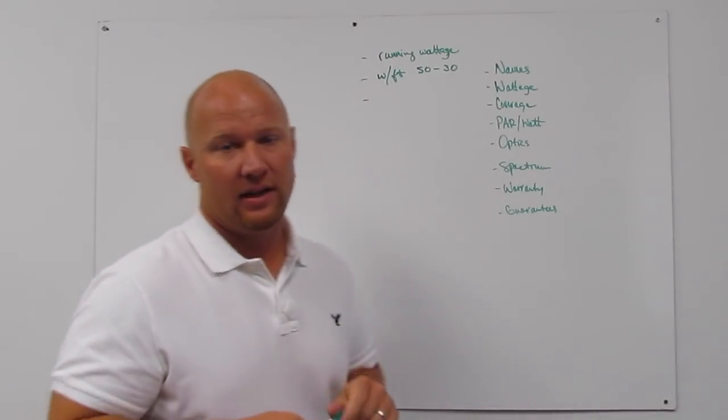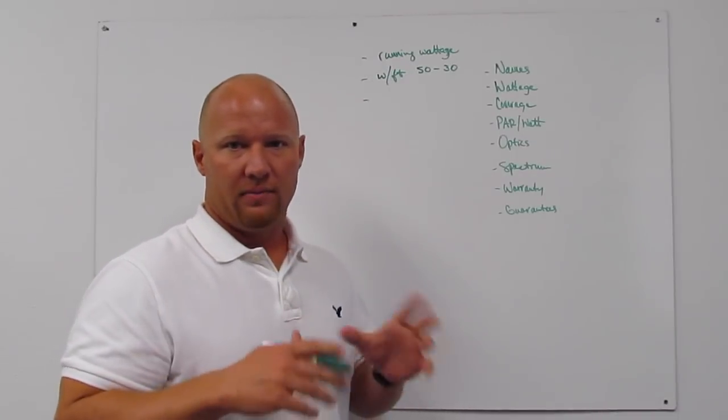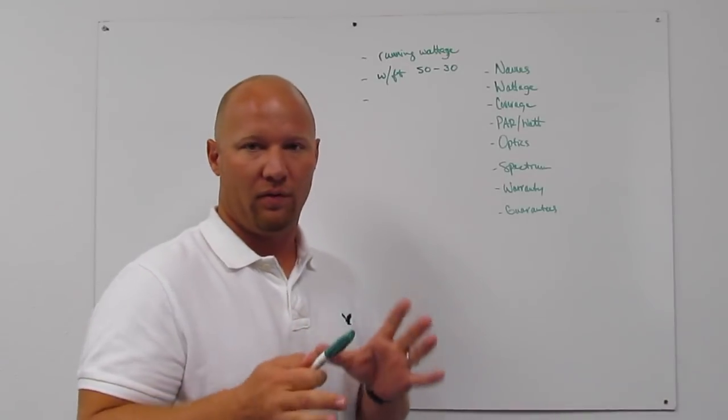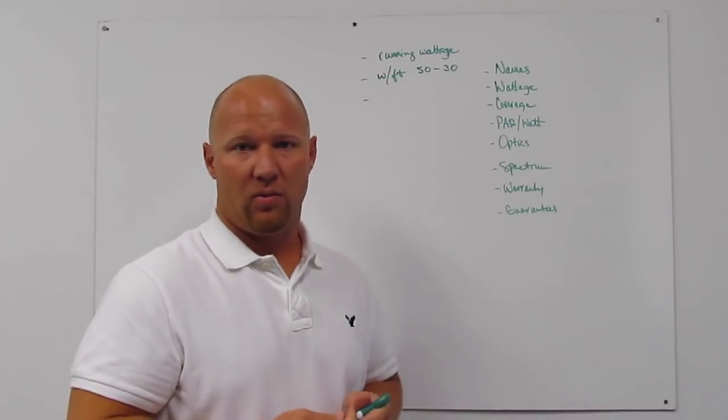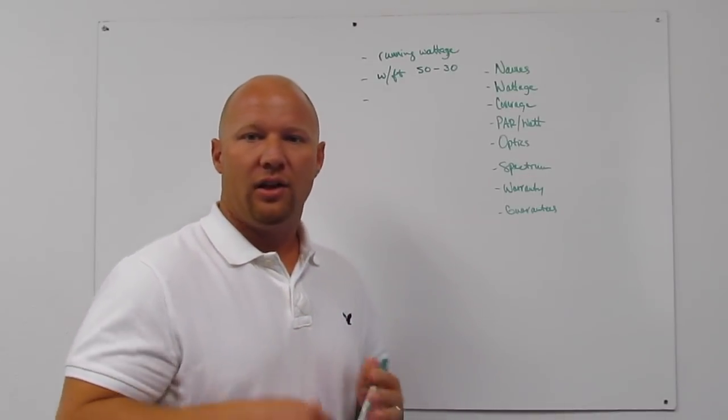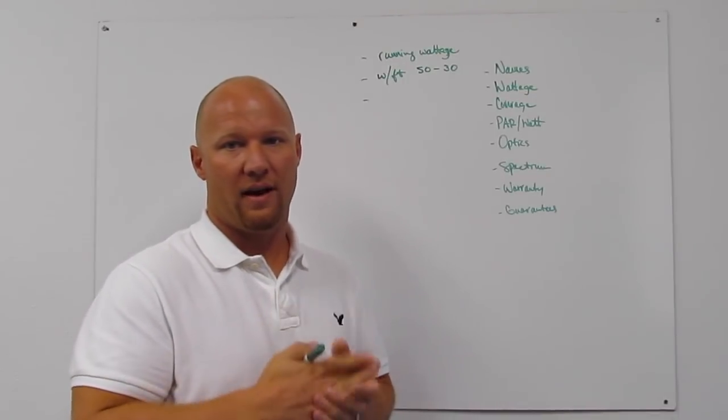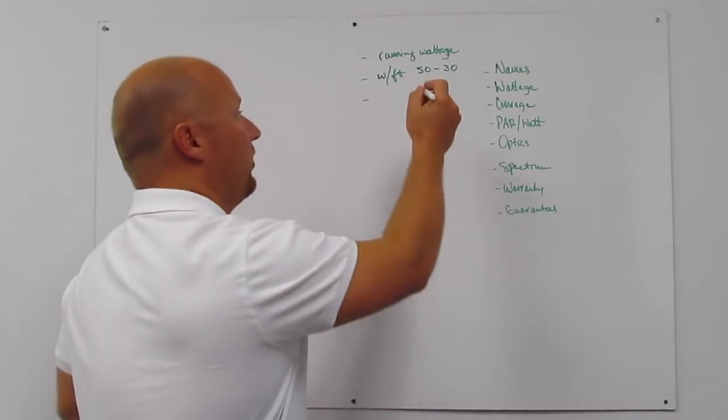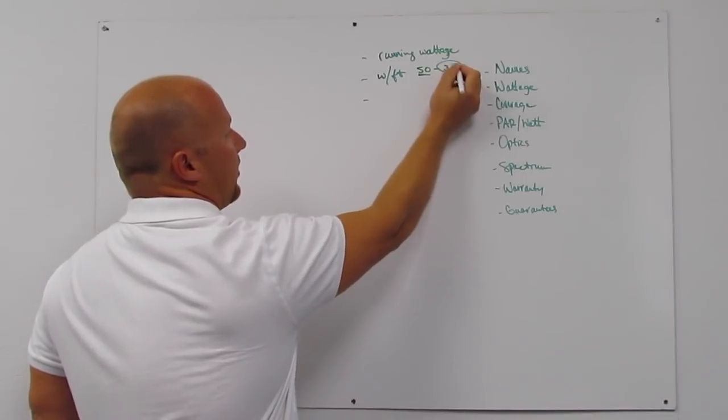So the next thing to cover is watt per foot. In any horticulture space or grow space when you're using grow lights, you're going to have a watt per foot ratio that you're looking for. With HID it's always been 50 watts per foot. That's industry standard. With LED you're looking usually at about half of that, and what we recommend is 30 watts to 35 watts per foot for LEDs. So that's a key indicator is watts per foot. HID you're looking at 50, with LED you're going to be looking at around 30 to 35.